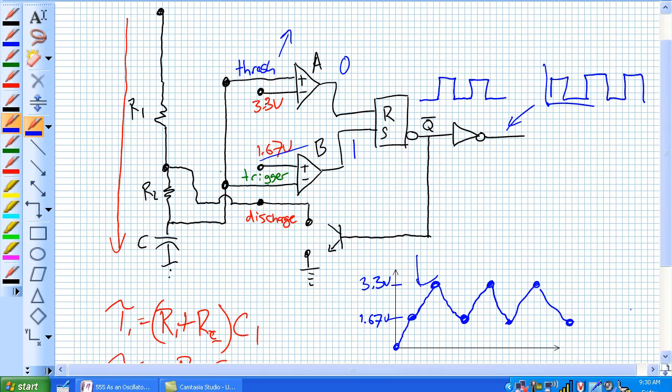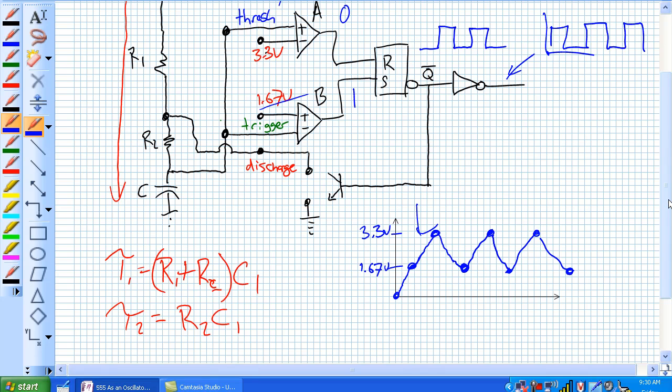So, what determines the frequency of this arrangement here? Well, it's obviously our resistor 1 and 2 and our capacitor. Traditionally, yes, those are the time constants for a straight-up RC network, but since we're dealing with the 555 timer, there's a little bit of idiosyncrasies with it.